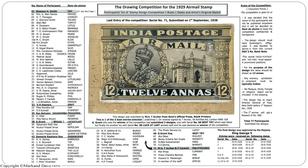Here we have the big item — the artist's sketch. There was a drawing competition for the 1929 airmail stamps of India in 1928, and a total of 77 participants entered. You will see 75 on the list as number 10 has entries 10, 10a, and 10b. The entry you are seeing in the center was submitted by T. Archer, who was working in the Security Printing Press at Nasik as one of the chief engravers of the stamps.